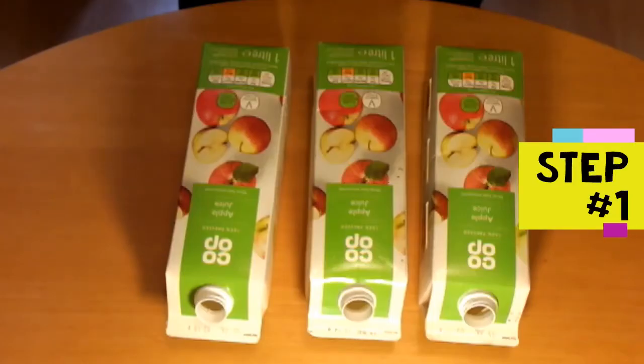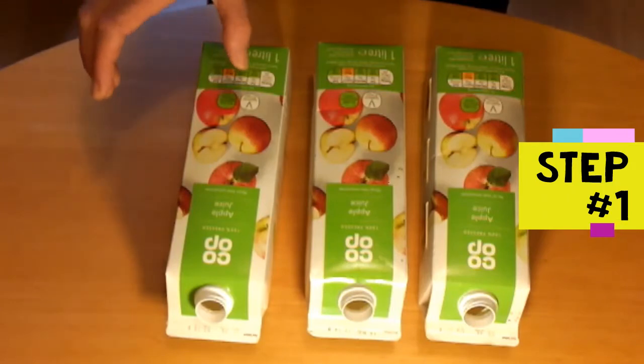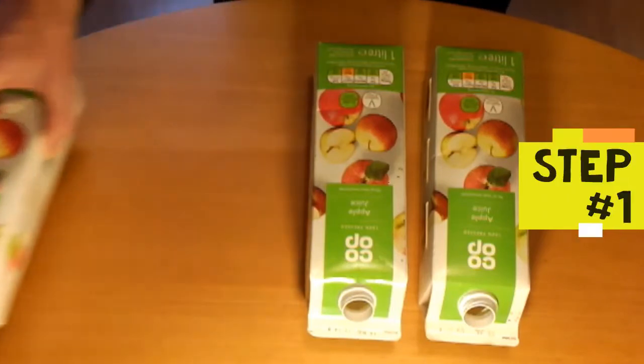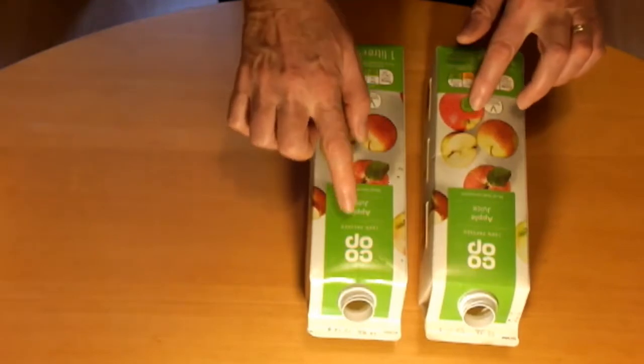Step 1 is to select the body of the guitar. Choose the juice carton in the best condition. These ones have small dents in.